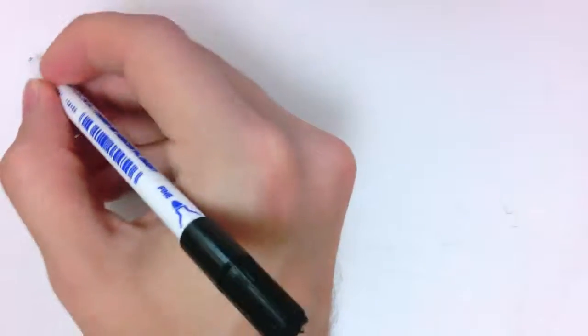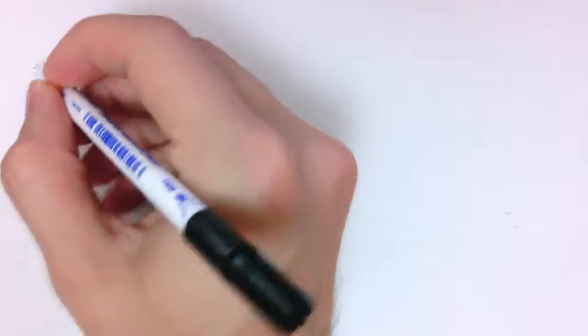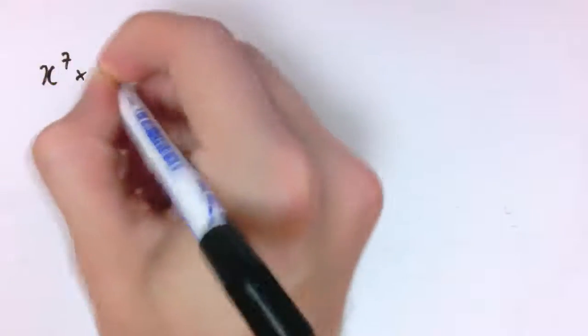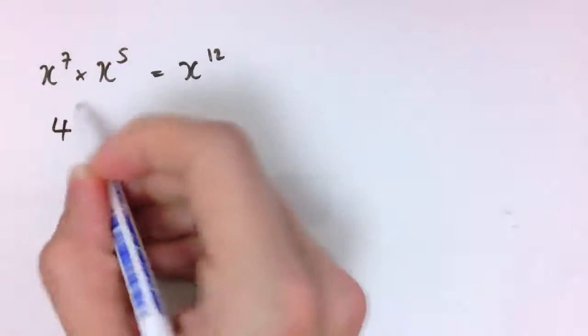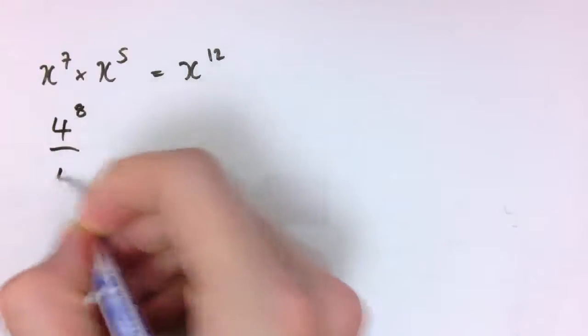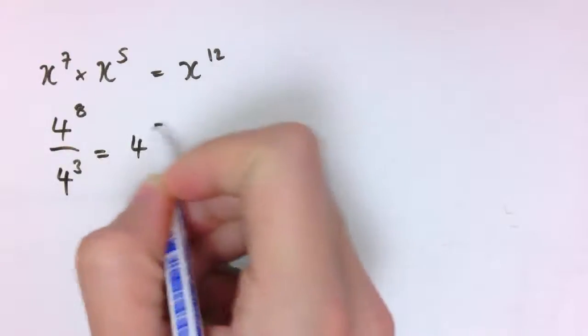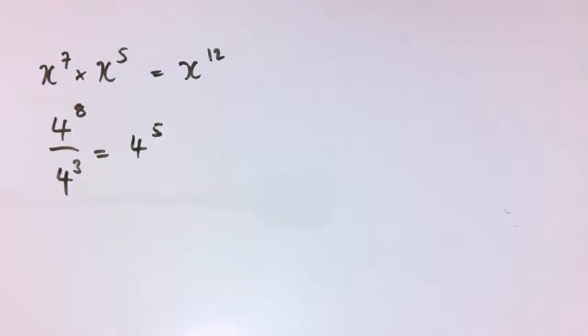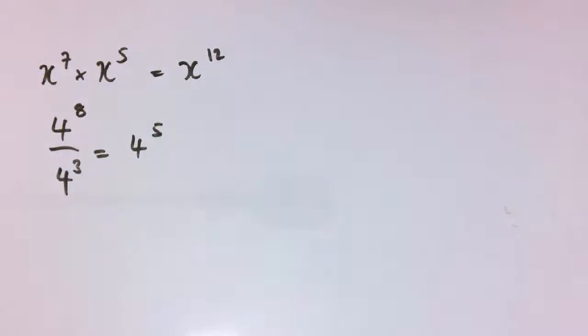In this video, I'm going to look at fractional indices. I'm going to assume that you're happy with things like x to the 7 times x to the 5 being x to the 12, or 4 to the 8 divided by 4 cubed being 4 to the 5, using those basic rules of indices. If not, look back at the video on those.